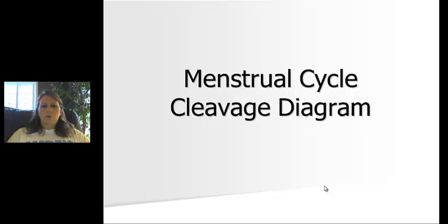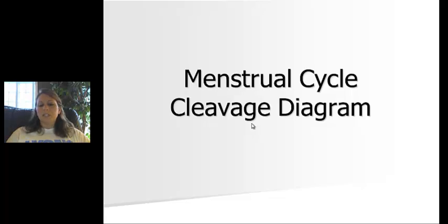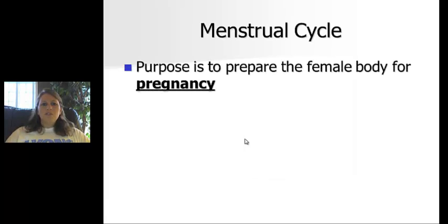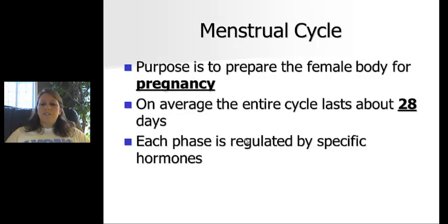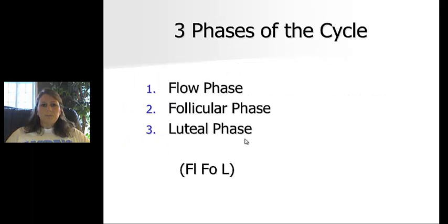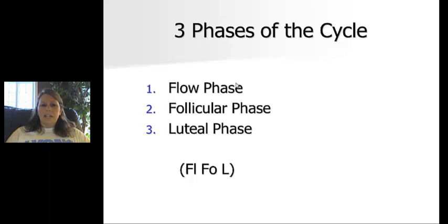Hello again. For this particular lecture we will be focusing on the menstrual cycle, and then I will walk you through what's called a cleavage diagram, and you will need to know how to label that. The main purpose of the menstrual cycle is to prepare the female body for pregnancy. The entire cycle lasts on average about 28 days, though it varies from woman to woman. Each phase is regulated by spikes or increases or decreases of a very specific hormone.